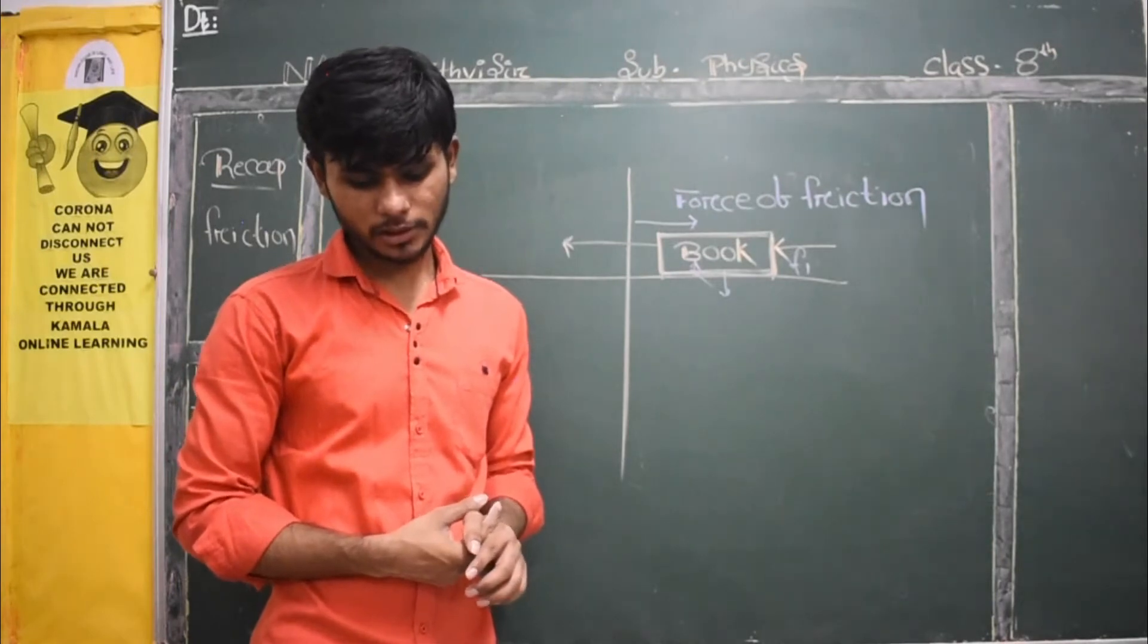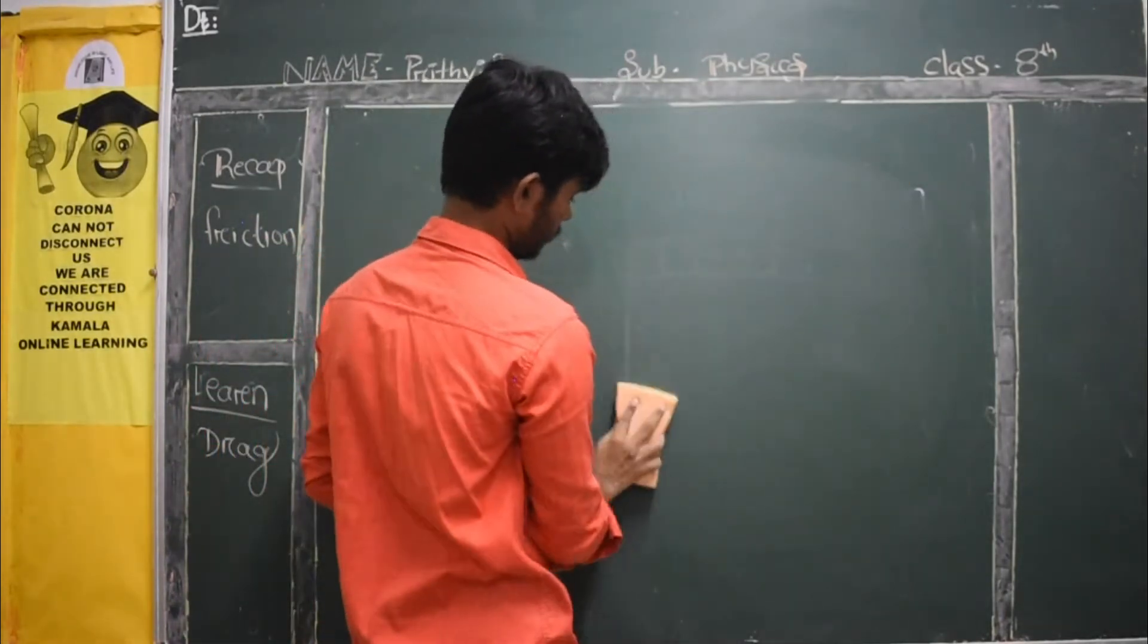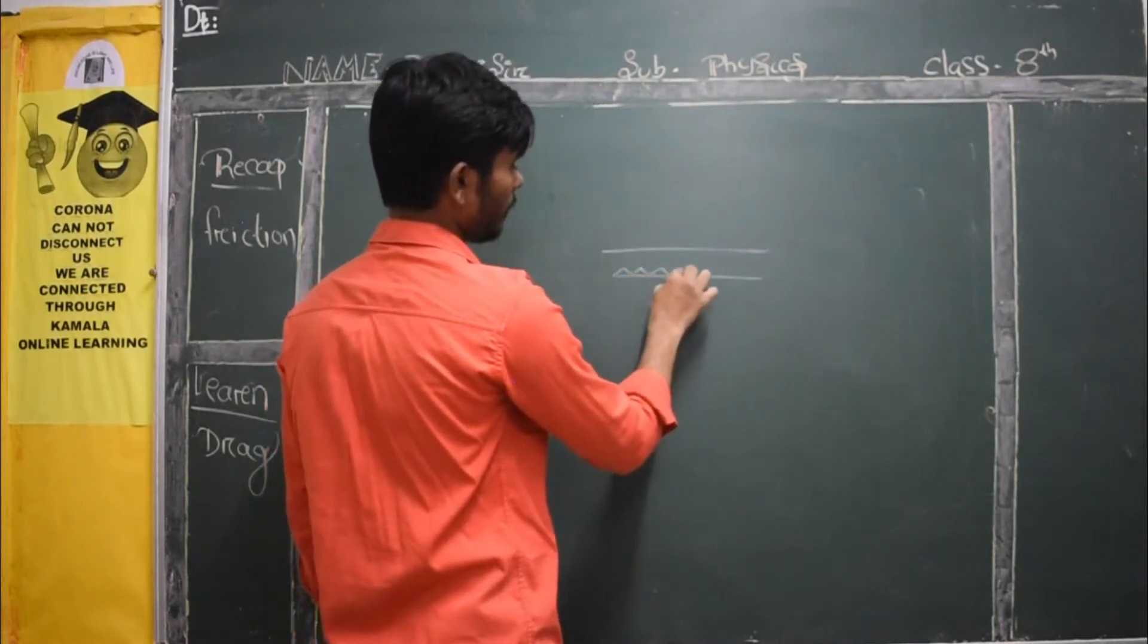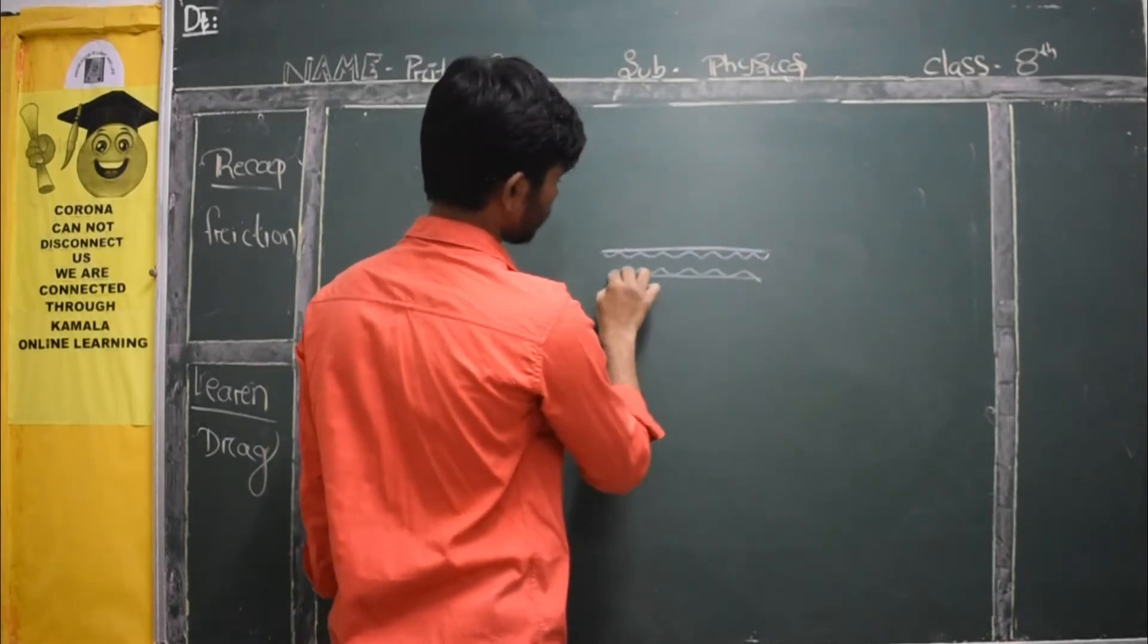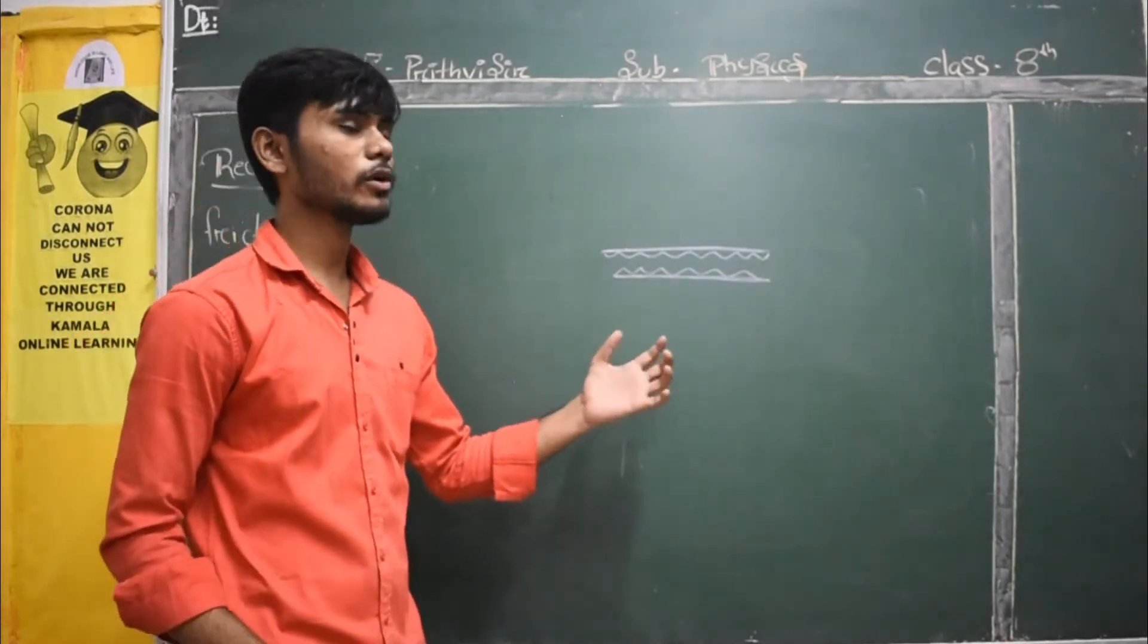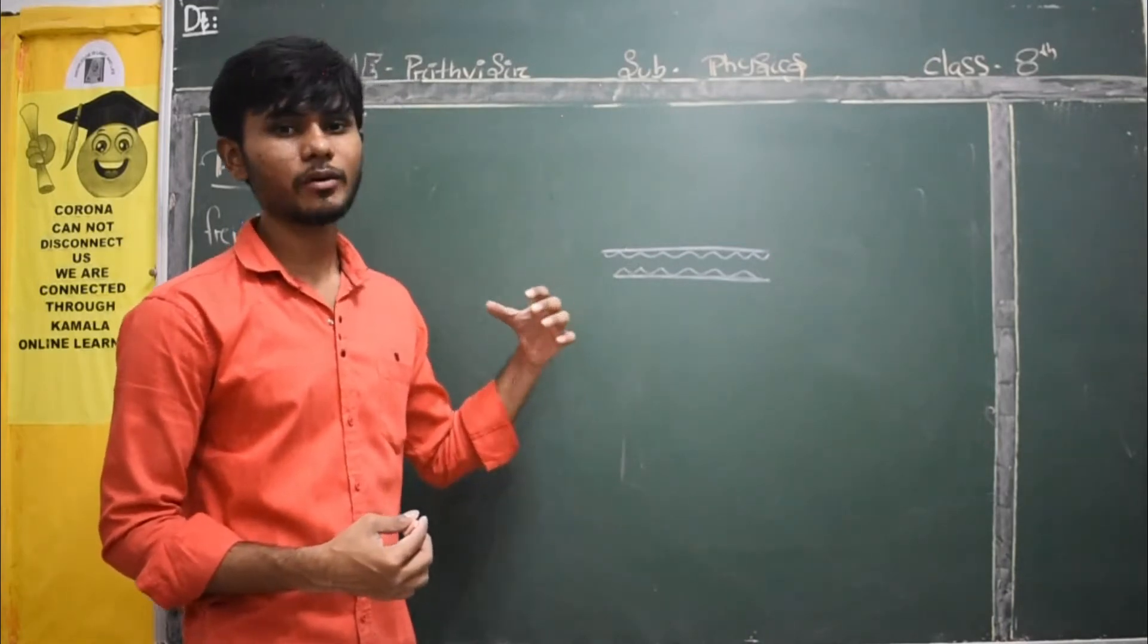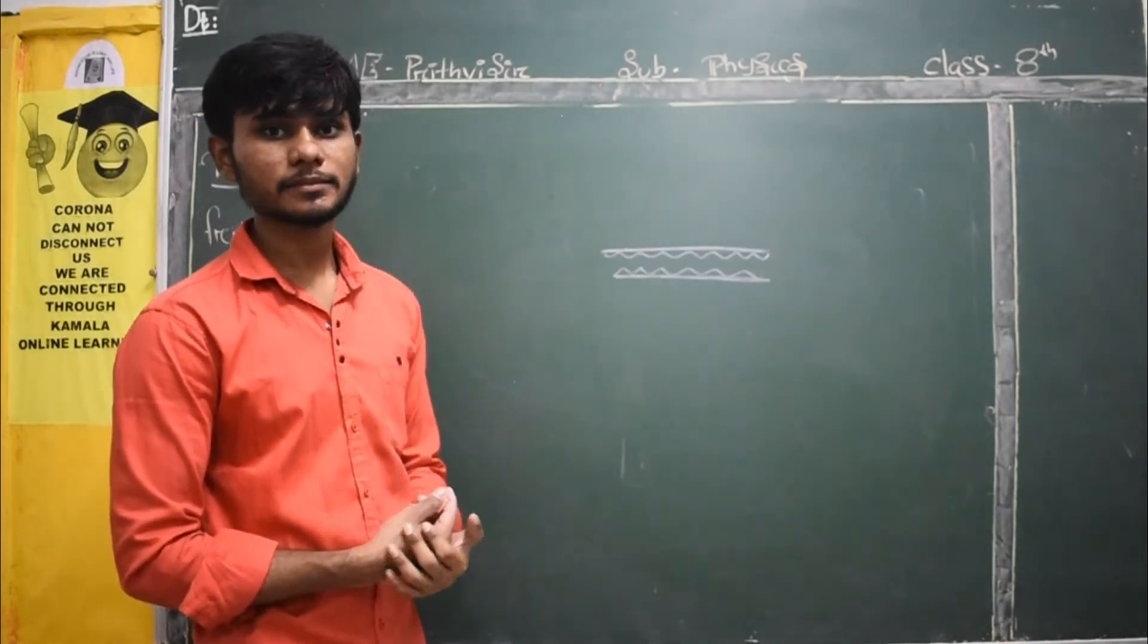Explain how does lubrication reduce friction. Okay, this is an important concept. How lubrication? See, every surface is having small amount of irregularities which we cannot see. At first, we cannot see those because our eyes are not up to that, like, microscopic. We cannot see a microscopic view.